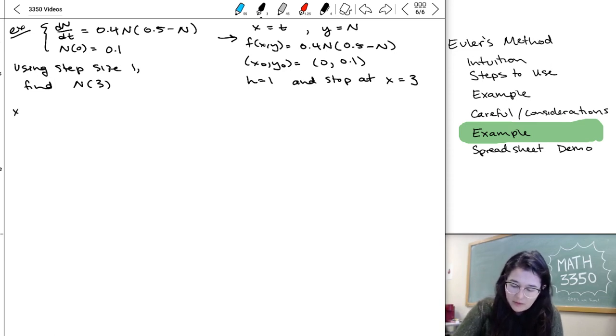So, we always start with what is our x0 and what is our y0. So, x0 is 0, y0 is 0.1, and I'm going to follow that advice that I gave of doing all my x steps first, just to know how many I'm going to need. So, x1 would be x0 plus h, so 0 plus 1, that's x0 plus h, or 1. x2 is going to be x1 plus h, so that's 1 plus 1 is 2.